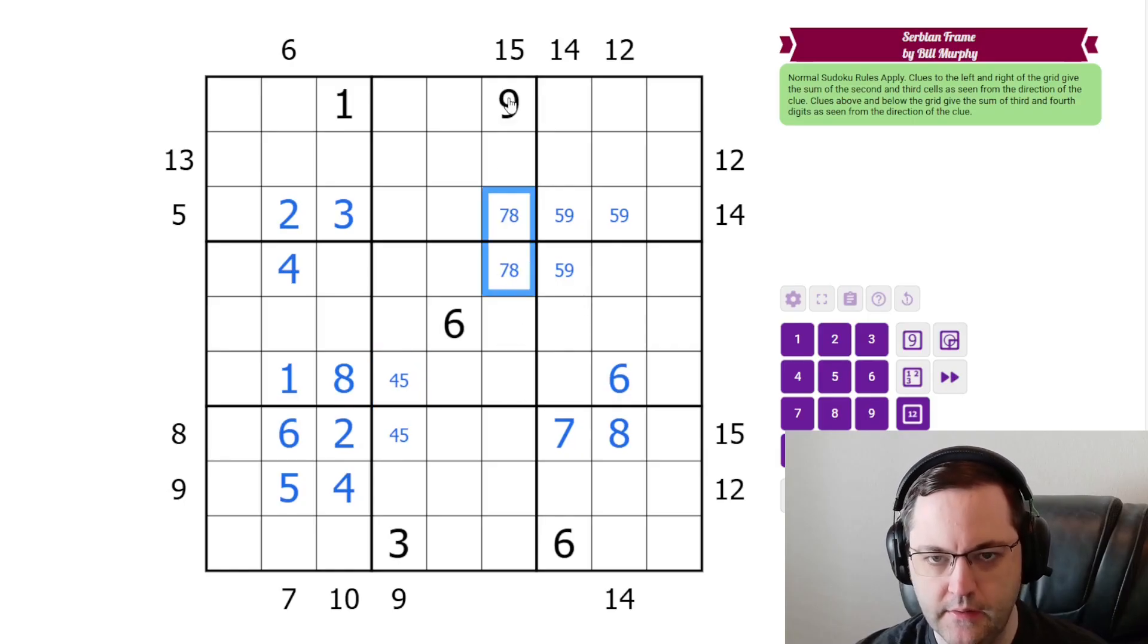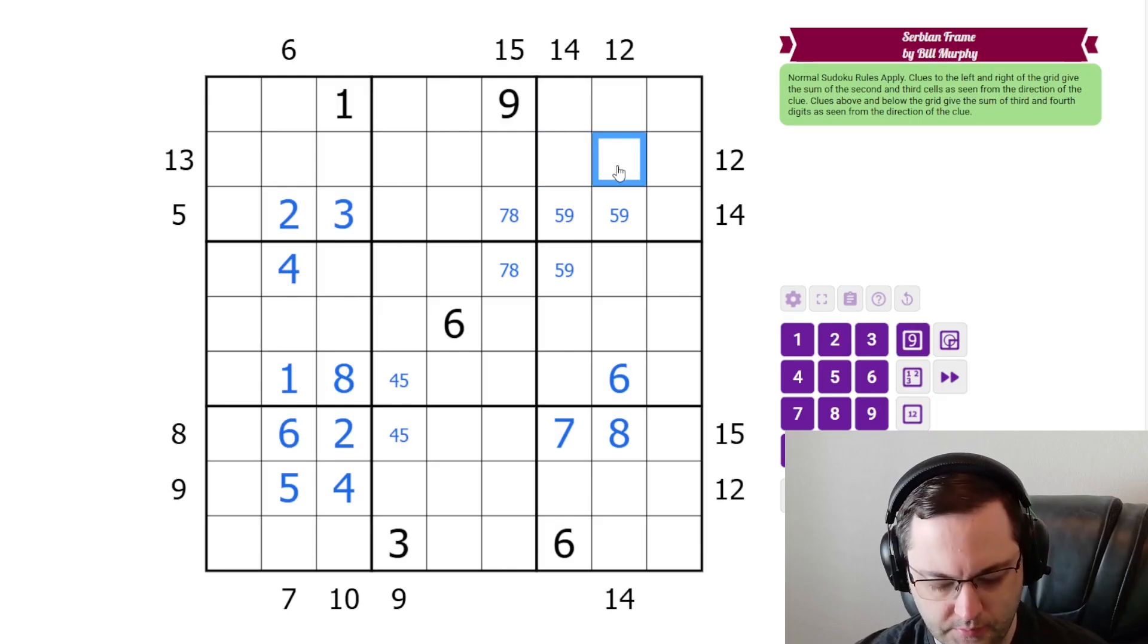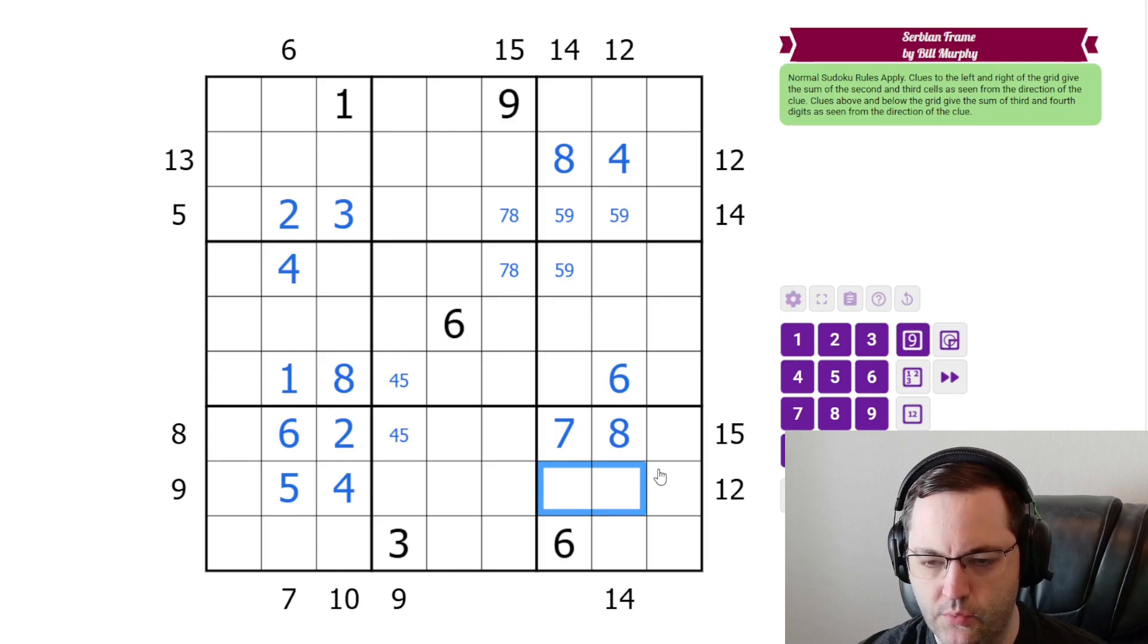This 15 must be seven, eight because of the nine here. The 12 can't be five, seven or three, nine. The only other possibility is four and eight. And this 12 can't be four, eight or five, seven from these. So it must be three, nine. And we know the order here because of the five, nine pair. And we actually get that resolved as well from the nine here.